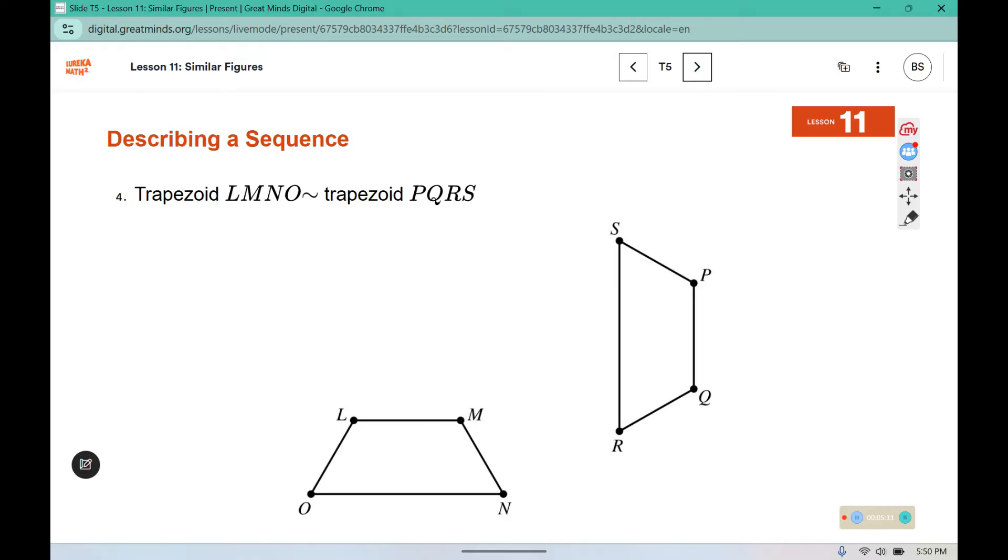Trapezoid LMNO is similar to trapezoid PQRS. We notice these were the same size, so we didn't need a dilation, but we do need to move from one point to match up a corresponding point. So we said to start by translating along the vector LR, and we indicate it's a vector using that little half arrow on the top.